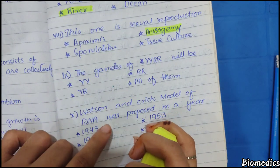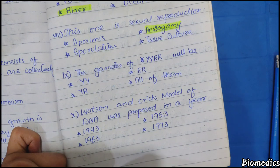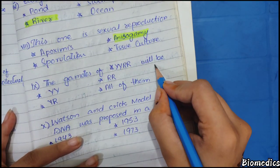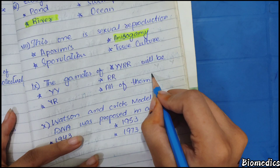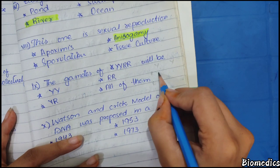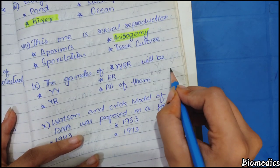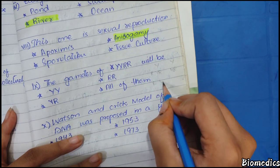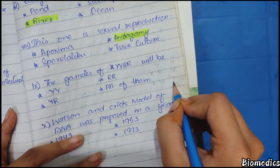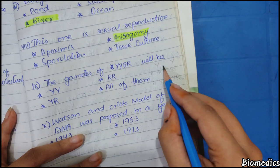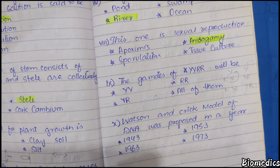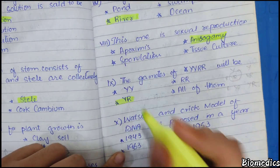The gametes of YYRR will be? This genotype YYRR produces gametes that are YR. So our answer is YR gametes.